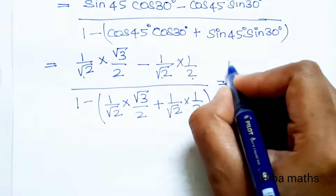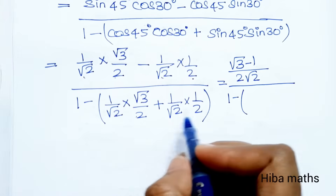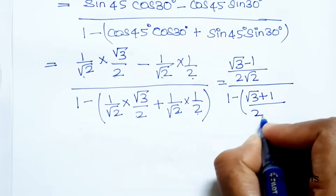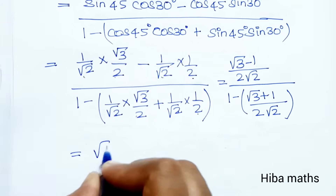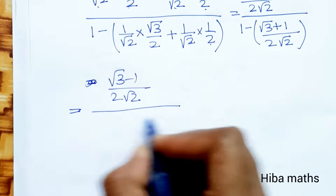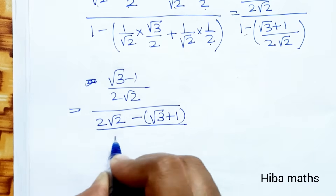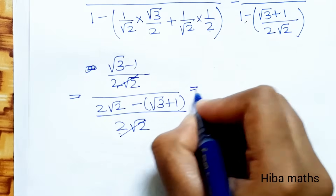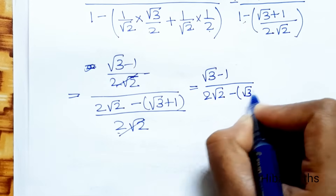Simplifying, 2√2 appears in the denominator of each term. The numerator becomes (√3 - 1)/(2√2) and the denominator becomes 1 - (√3 + 1)/(2√2). Dividing, and canceling 2√2, we get (√3 - 1) divided by (2√2 - √3 - 1).